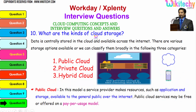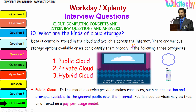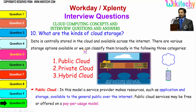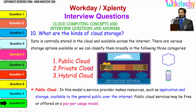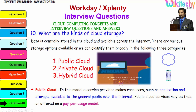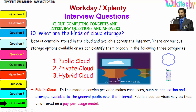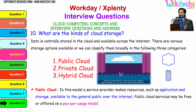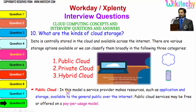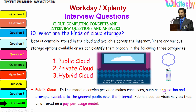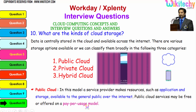Now let's talk about the kinds of cloud storage. Data is centrally stored in the cloud and available across the internet. There are three major storage options: public cloud, private cloud, and hybrid cloud. The public cloud is like going to a movie theater. In this model, a service provider makes resources such as applications and storage available to the general public over the internet. Public cloud services may be free or offered on a pay-per-usage model.